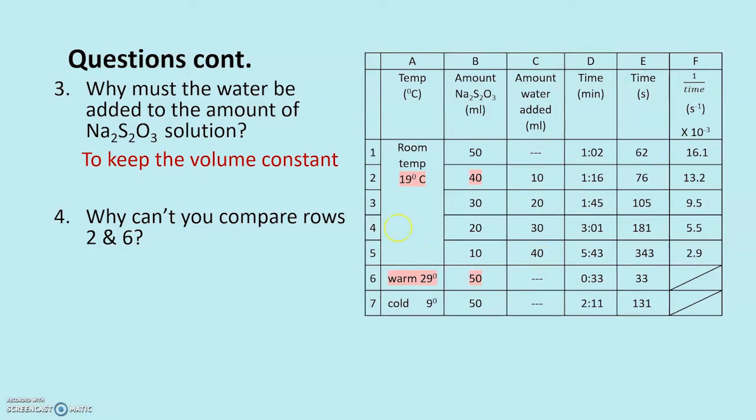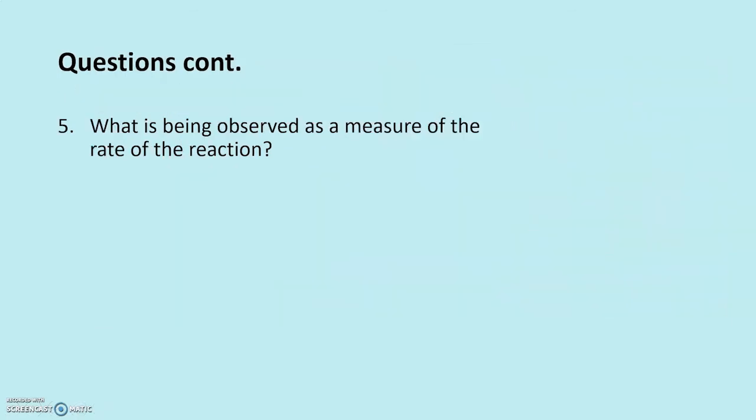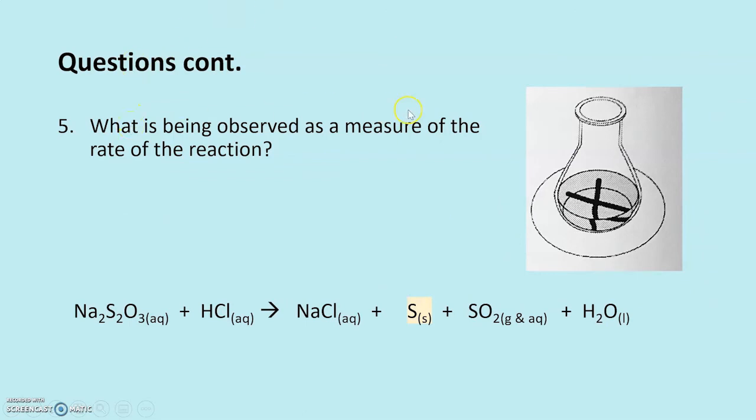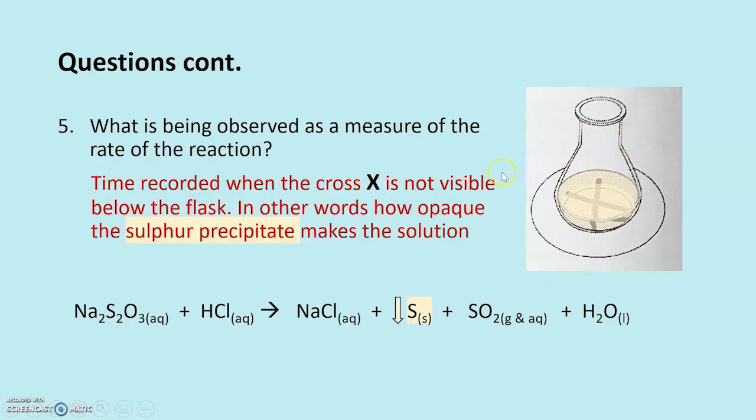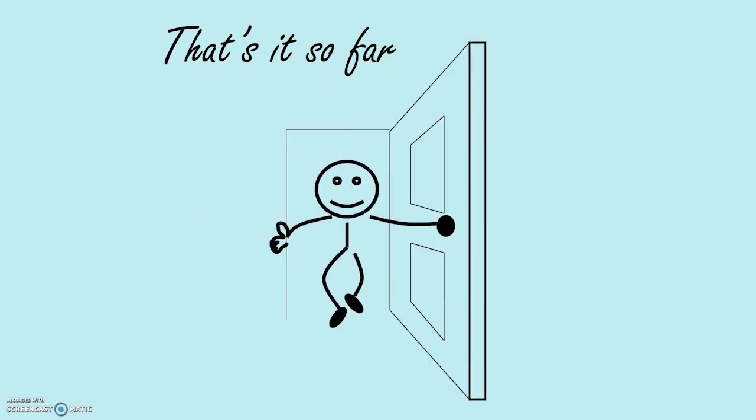Why can't we compare rows number two with rows number six? Well, we've changed both the temperature and the volume. And you can't change two variables at a time. Question five. What is being observed as a measure of the rate of the reaction? Well, we had a cross below the conical flask and it's the formation of the precipitate that gets more and more and eventually obscures the cross, making it invisible. And that's it. Thanks for joining us.